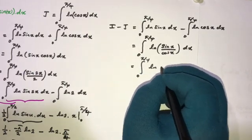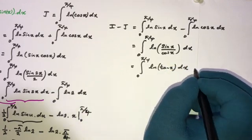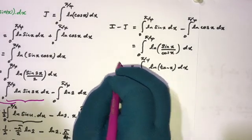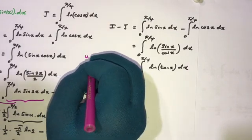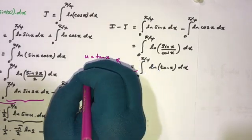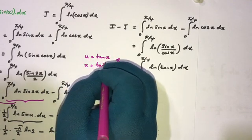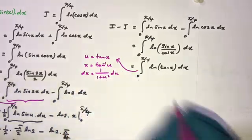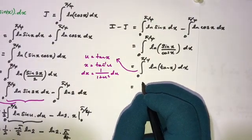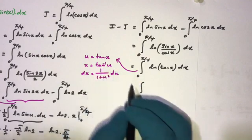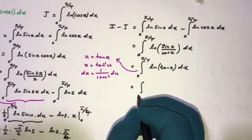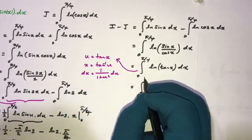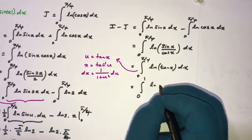Since sin x / cos x = tan x, we have I minus J equals the integral from 0 to π/4 of ln(tan x) dx. For this integral I use the substitution u = tan x, so x = arctan(u) and dx = du / (1 + u²). When x → 0, u → 0; when x = π/4, tan(π/4) = 1, so the new limits are 0 to 1.